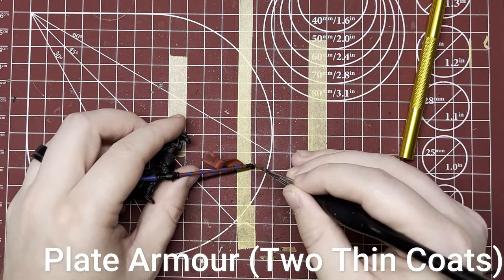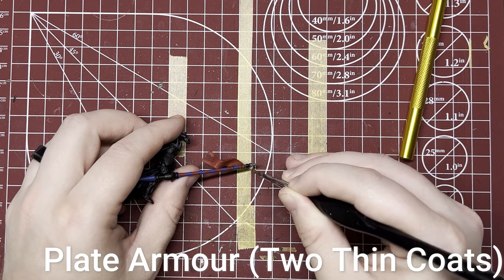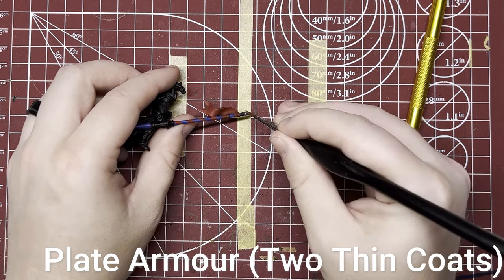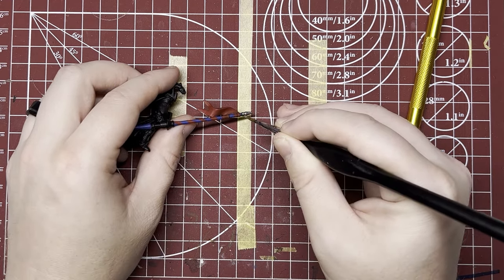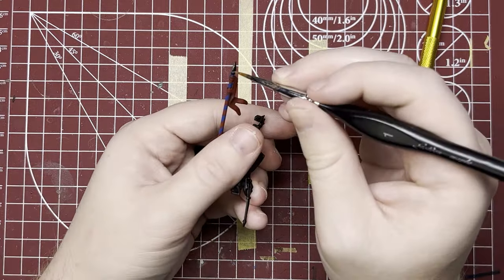Now we're just going to finish up this lance. I painted the flag the same red color. Now I'm doing a base coat of a darker metallic on all the metal bits of the lance.